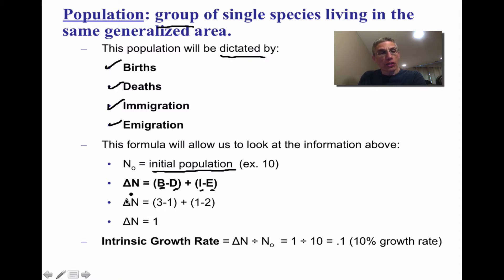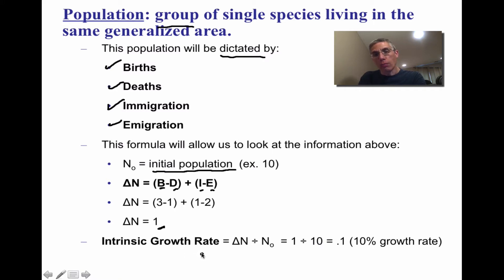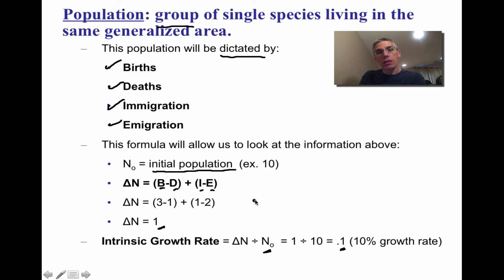For example, with a birth rate of 3, one death, one individual moving in, and two moving out, we get a change in population of one. To find the intrinsic growth rate, divide the change in N (which is 1) by the initial population (10), giving us 0.1 — a 10% growth rate.